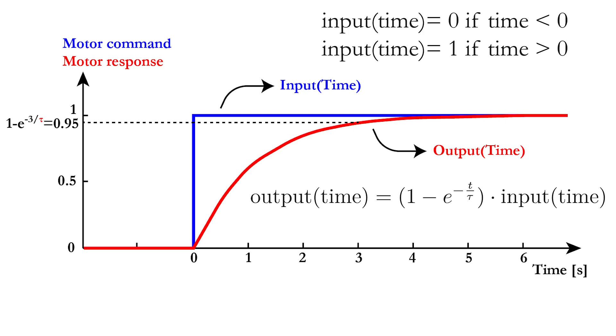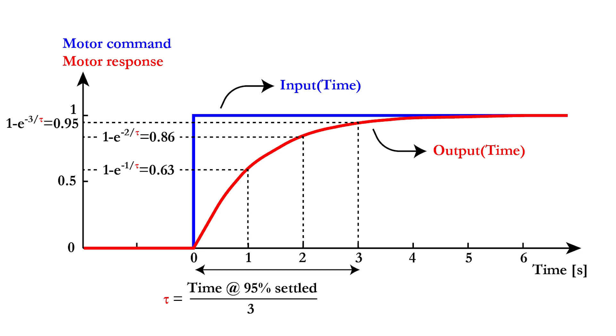Tau is defined as the time at which the motor output reaches 95% of the desired value, divided by 3. This means that at 95, 86 and 63, the pass time will be respectively 3, 2 and 1 seconds, when tau is equal to 1.